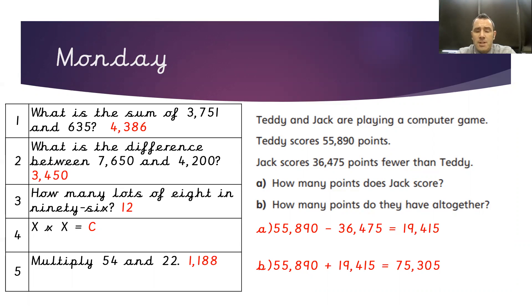To work out how many points they have altogether, we would need to combine 55,890 and 19,415, which will give us an answer of 75,305.